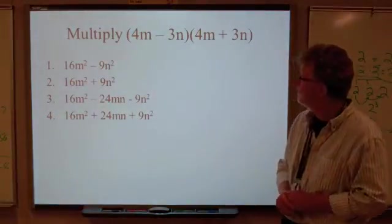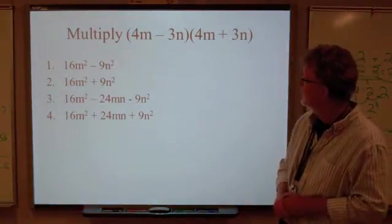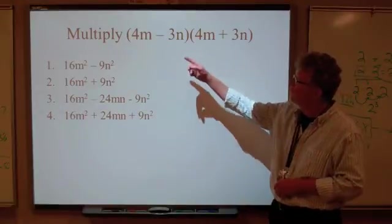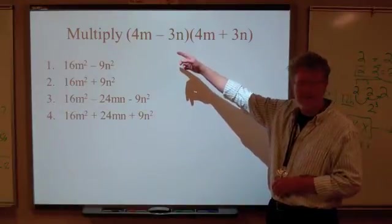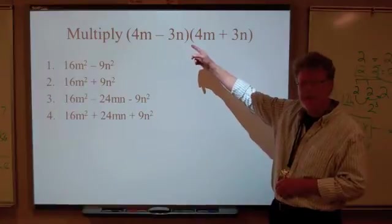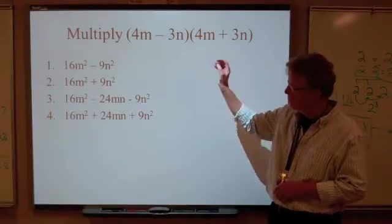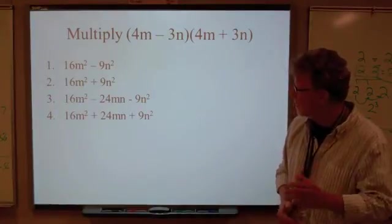Now try this one: (4m - 3n)(4m + 3n). If you notice, the terms in the a slot are the same, the term in the b slot is the same, the signs are different. So I'll give you a second to work this one out.